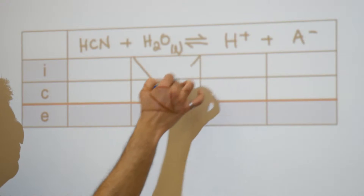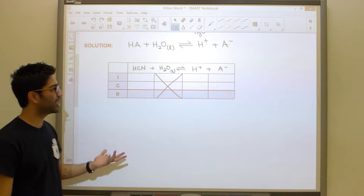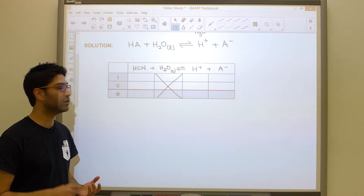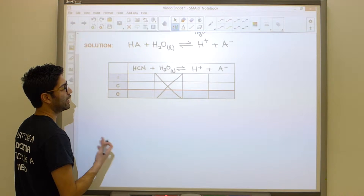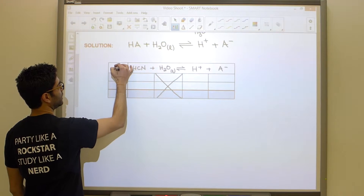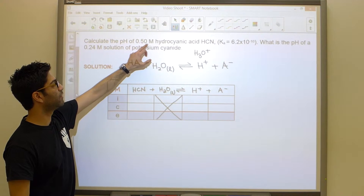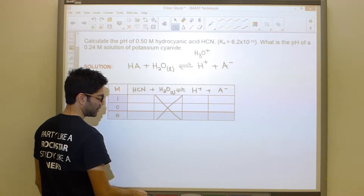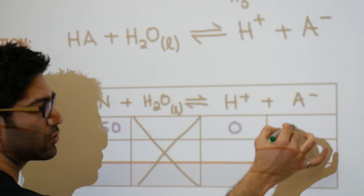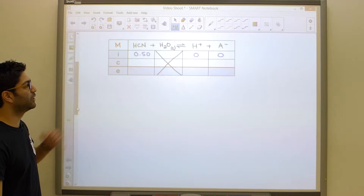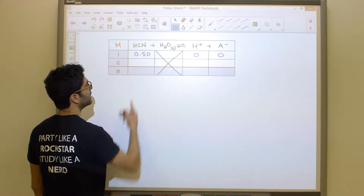The water column, being liquid, is often omitted from the equation and that's acceptable. The entire water column does not matter to us. It's also good to note the units being used — in this case molarity, capital M. Reading the question, we have a 0.50 molar solution of hydrocyanic acid, so we insert that as our initial value. No products have been formed yet, so those start at zero.